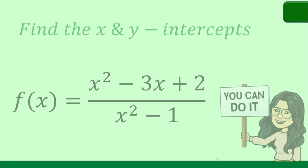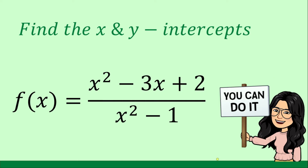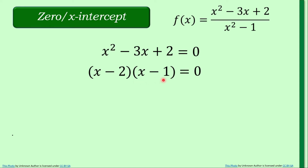Given f(x) is equal to x squared minus 3x plus 2 over x squared minus 1, let's find the x and y-intercepts. You may pause this video and take your time in answering. We will take the numerator x squared minus 3x plus 2 and equate that to zero. Since it's factorable, we write it as (x minus 2)(x minus 1) equals zero.